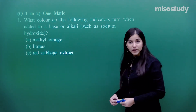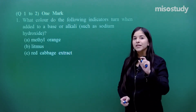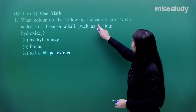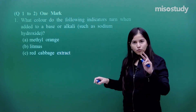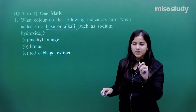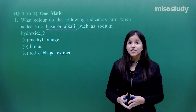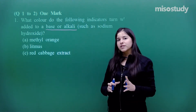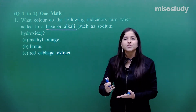Question number 1 is a 1-mark question, so you have to be very precise and brief. What colour do the following indicators turn when added to a base or alkali? Base and alkali are one and the same thing. So they are adding the base to all these indicators — what colour change would you observe? Methyl orange: its actual colour is orange, and whenever we add some base onto it, it gets converted into yellow colour.